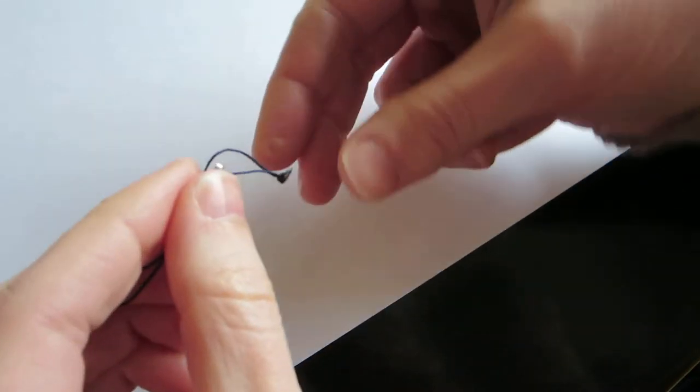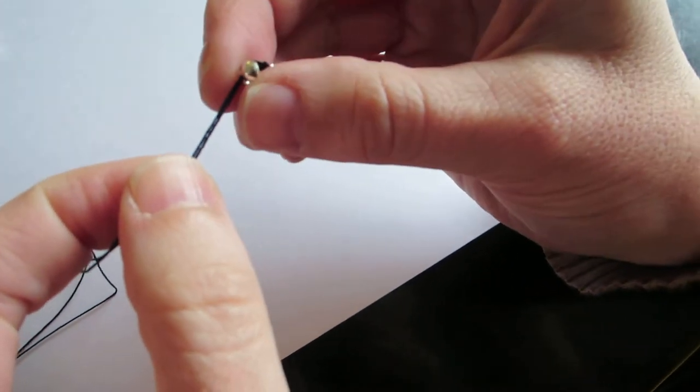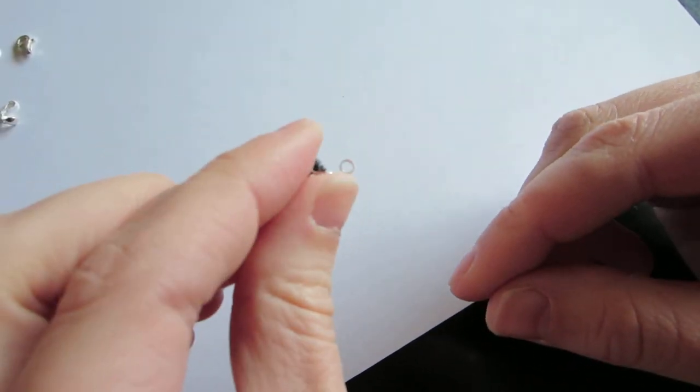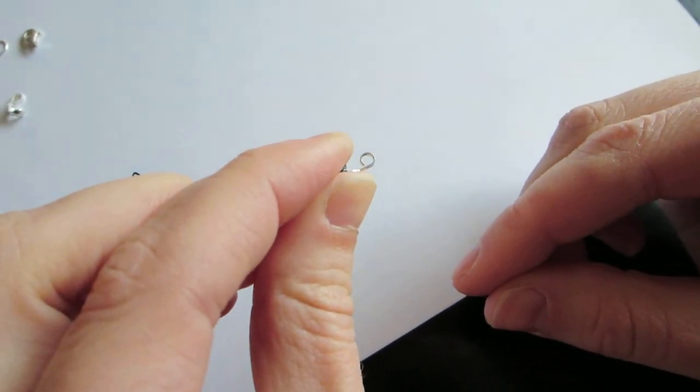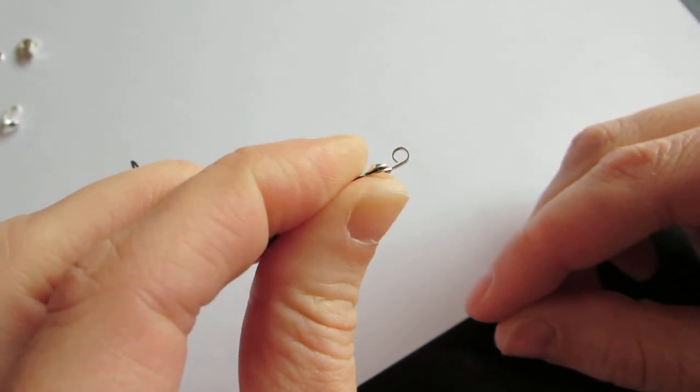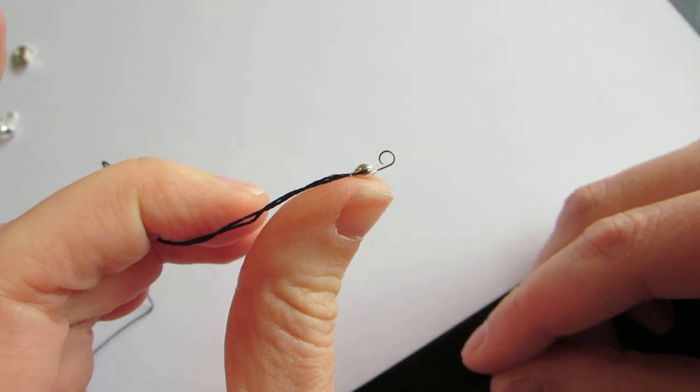We make sure that those two ends are even so that we don't have a bubble in our thread. Pull the knot into the clamshell right there, and then I use my fingers. Some people use pliers, but I feel like it's safer to use your fingers. We clamp down that clamshell till it's closed and the knot is inside. That's how you start your necklace.